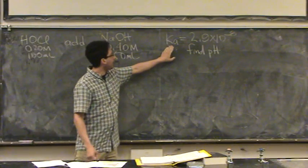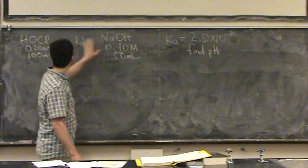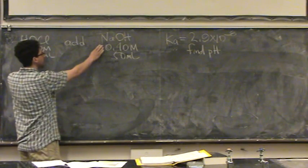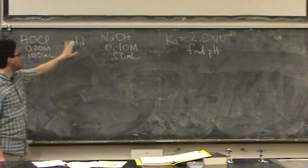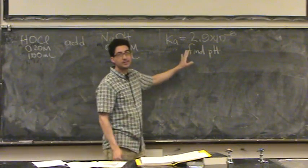I know the Ka of which one? The one on the right or left? The left, because this is an acid. It's a weak acid, I'm adding a strong base. I want to find the pH.